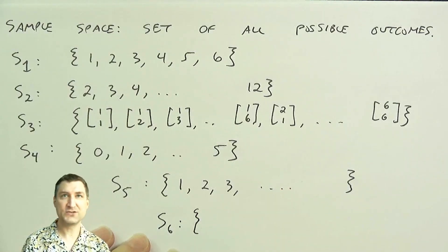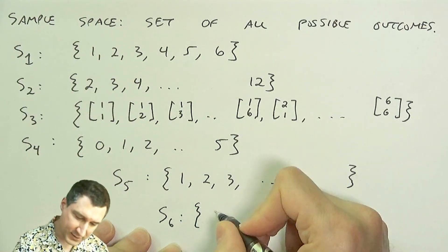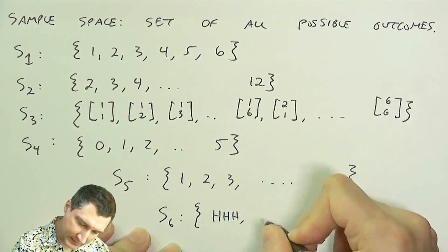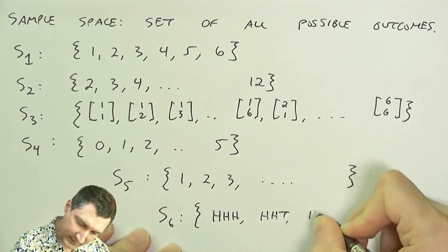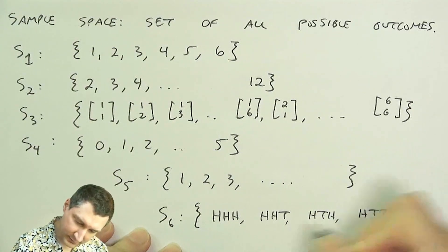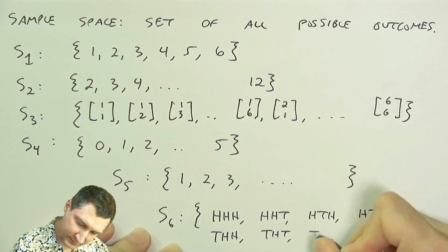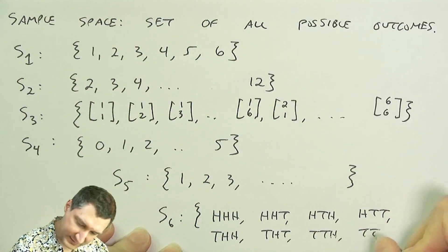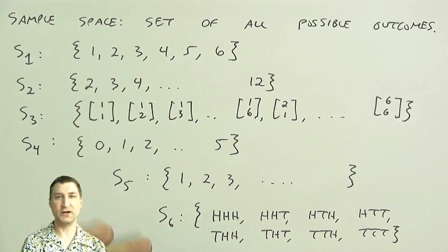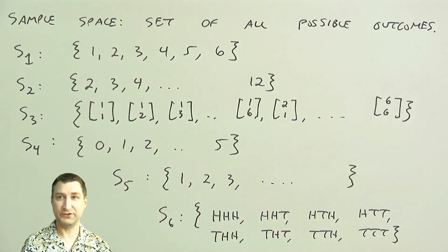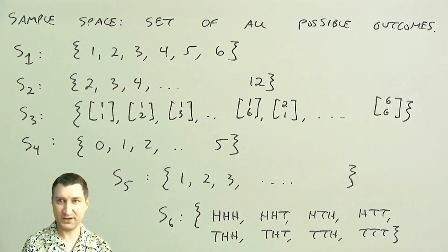And finally, the case where I'm recording a pattern, right? So here, I could have eight possibilities, right? Head, head, head. Head, head, tail. Head, tail, head. Head, tail, tail. Tail, head, head. Tail, head, tail. Tail, tail, head. Tail, tail, tail. So here's a case where, again, the sample space is not numerical. It's still discrete. I have eight possible outcomes, but these are patterns and not numbers, okay?